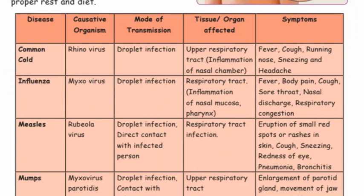Influenza: causative organism is myxovirus, mode of transmission is droplet infection. The organ affected shows inflammation of nasal mucosa and pharynx. Symptoms include fever, body pain, cough, sore throat, nasal discharge and respiratory congestion.